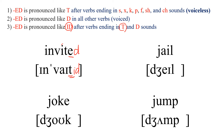Next one: JAIL. It is a noun, but it is used as a verb as well. This ends in a consonant, so we put ED. The ending is L, which is a voiced sound, so we just add D and read: JAILED.